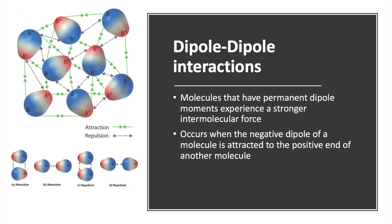Intermolecular forces are broken up into several types based on the phenomenon that causes them. Molecules that have permanent dipole moments experience a stronger intermolecular force known as dipole-dipole interaction. This occurs when the negative dipole of a molecule is attracted to the positive end of another molecule. The stronger the polarity of the molecule, the stronger the attractive force becomes.